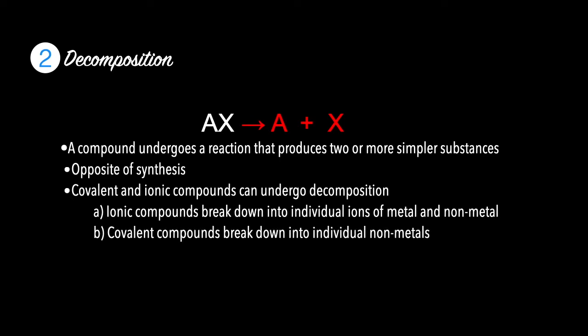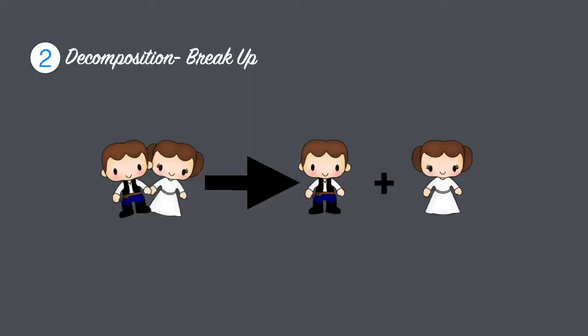Ionic compounds break down into individual ions of metal and non-metal, whereas covalent compounds break down into individual non-metals. Here's a picture of decomposition. Think of decomposition as a breakup. You start with a couple, then the couple goes through a breakup, creating two separate individuals that are no longer together. In variable form, you can see decomposition as AB breaking down into A plus B.